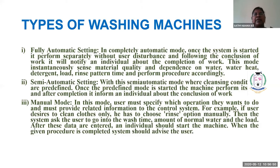In manual mode, all operations must be done by the user — selecting the water inlet, then wash, rinse, and spin operations done manually. In semi-automatic mode, the user programs the washing machine and the microcontroller or microprocessor performs the job. In fully automatic mode, there is no human intervention.